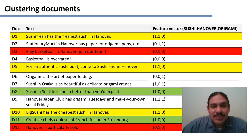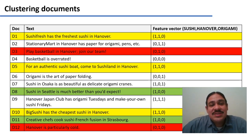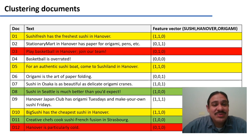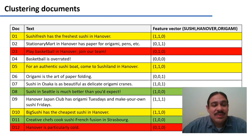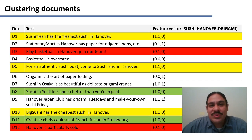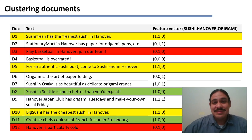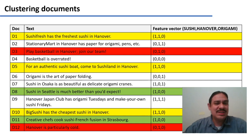The yellow-highlighted documents also share the same features. 'Sushi Fresh has the freshest sushi in Hanover' is 1,1,0. 'For authentic sushi, visit CryptoSushiLand in Hanover' is 1,1,0. 'Big Sushi has the cheapest sushi in Hanover' is also 1,1,0. All three documents have the same description in our feature system, and they are probably related — they all talk about restaurants with sushi in Hanover.